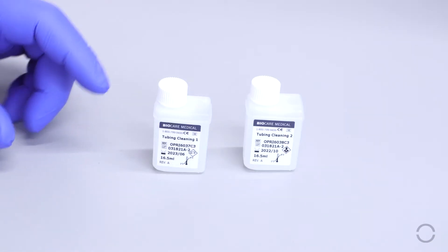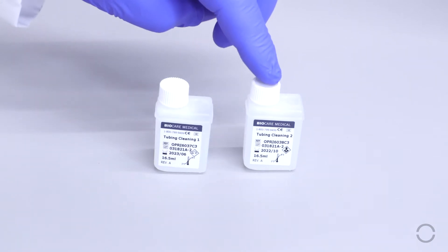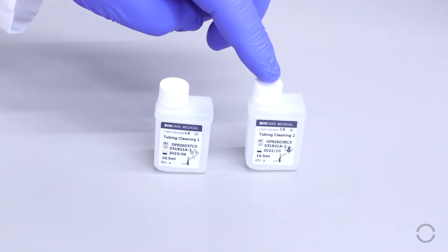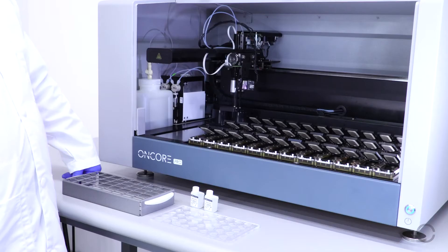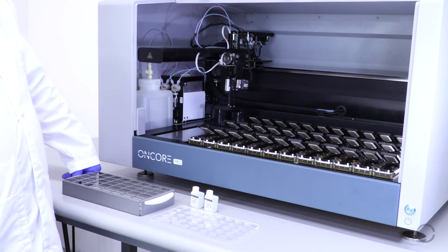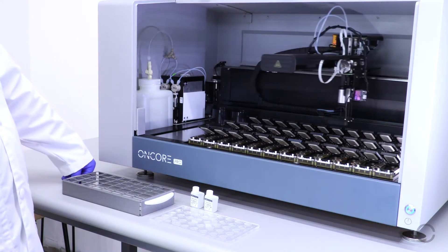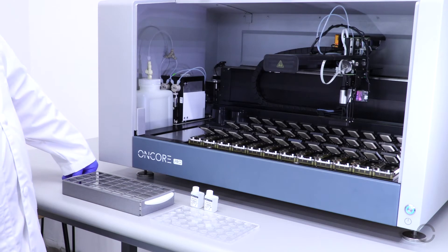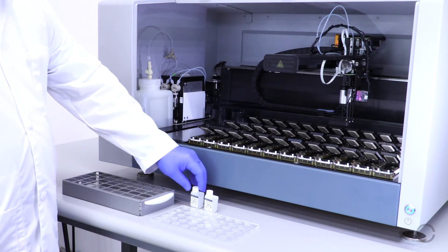To perform the tubing cleaning, you will need tubing cleaning reagent 1 and tubing cleaning reagent 2. Make sure the instrument arm is moved aside for loading and unloading. To begin, take tubing cleaning reagent 1 and load it into position 1 in the reagent tray.